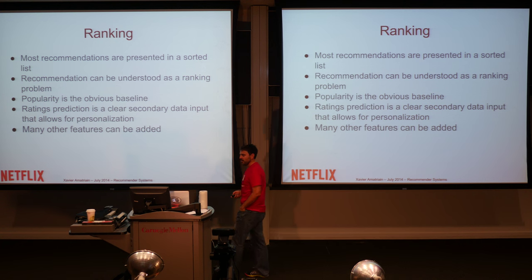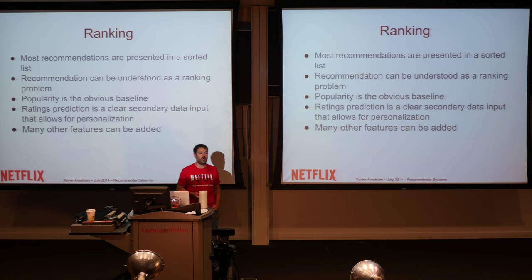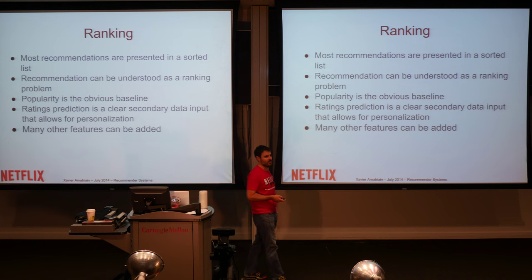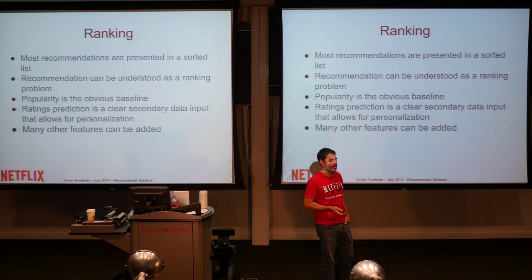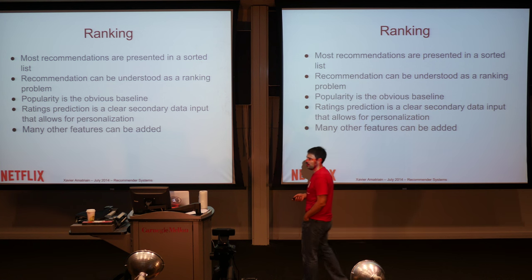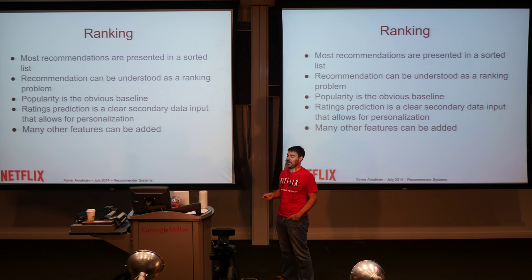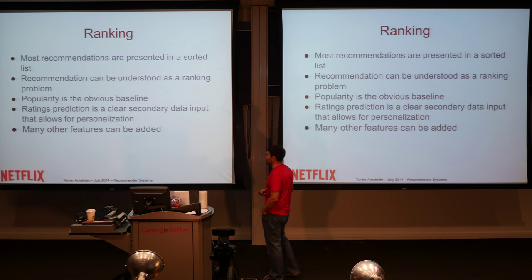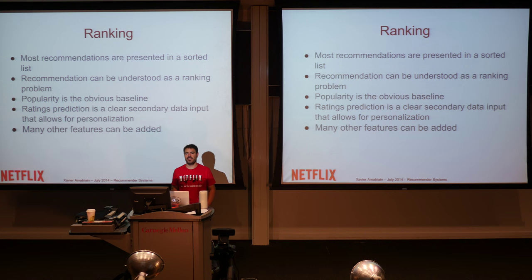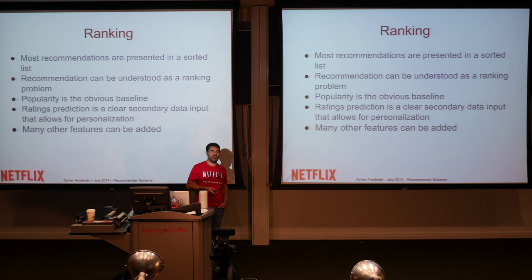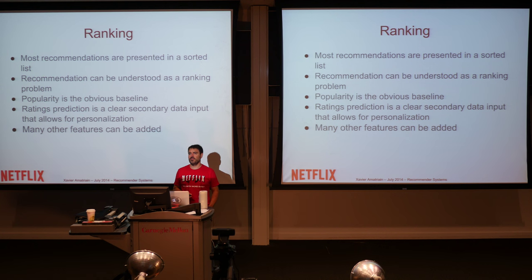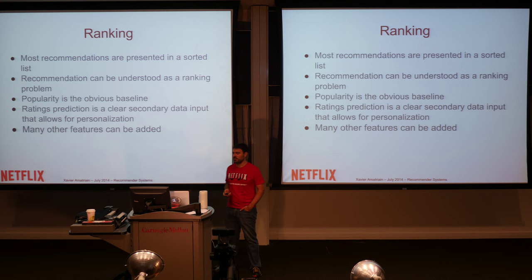If you think about it, the final goal of most recommendations is to produce a ranking. You can think of the recommendation problem as one of ranking: you have a set of possible items in a collection that you want to present to the user, and you have to come up with an ordered list or ranking of those items. Popularity is the obvious baseline, and anything you can add on top of that — for example, ratings — can be thought of as a secondary input to the ranking function to make it personalized.